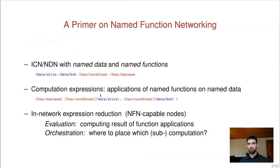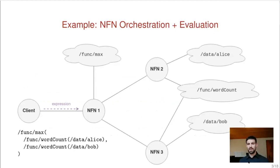Here is an example where two documents are involved: data Alice and data Bob. The interest is counting the number of words in both documents, and then returning the maximum value of these two integers as a final result. NFN offers an in-network expression reduction service performed by certain NFN-capable nodes. This includes evaluation — where function code is applied to data — and orchestration, which is about the decision of where to evaluate which computation or subcomputation.